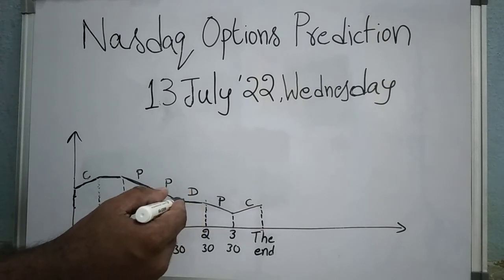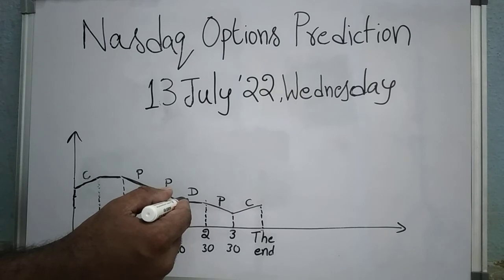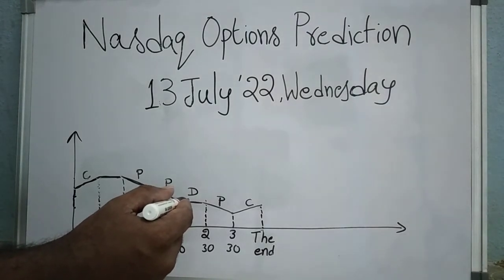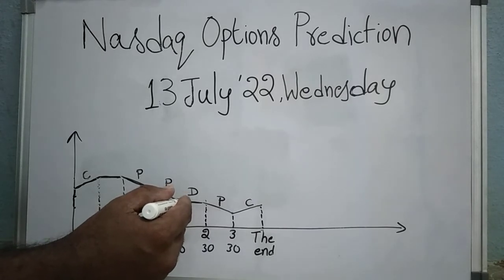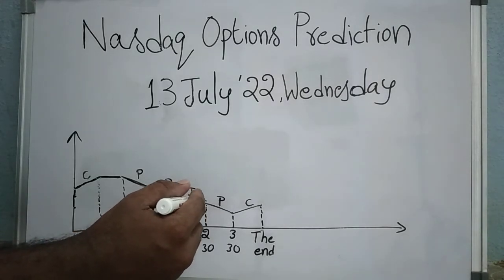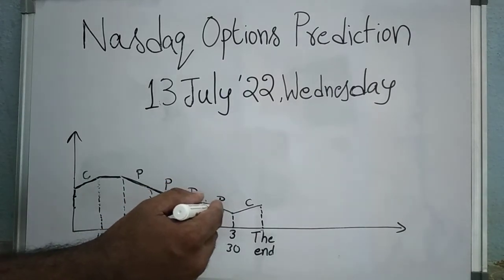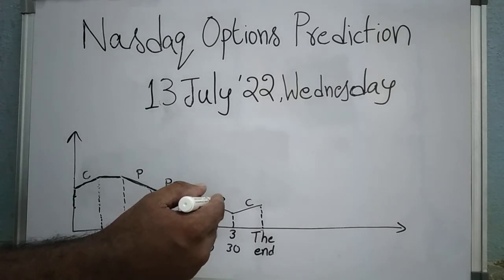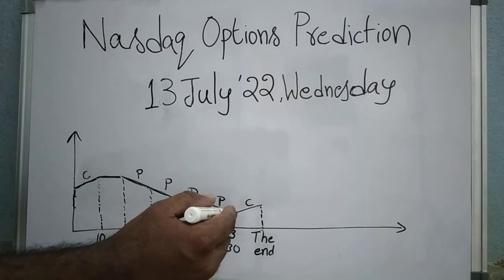From 1:30 p.m. to 2:30 p.m., the market movement is dependent on news and also the market trend itself. Generally it is observed that the overall day trend is reflected by the movement in this time period. From 2:30 p.m. to 3:30 p.m., the market may show again downward movement, so that the market may give us an opportunity to take a put option.